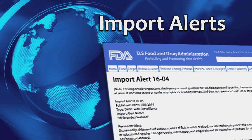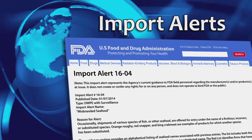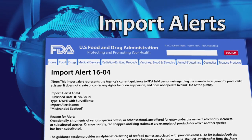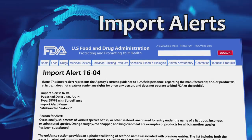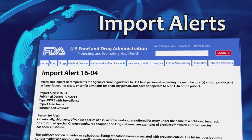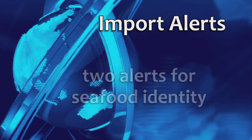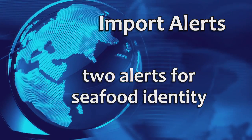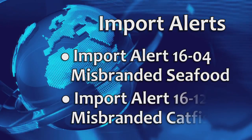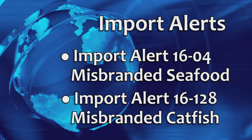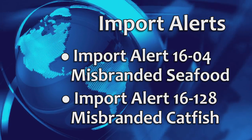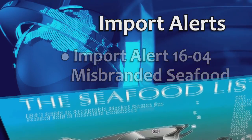Import alerts are product, firm, or country specific and describe known violations of FDA's laws and regulations. Although there are several alerts that involve seafood, we have two alerts specifically for seafood identity: misbranded seafood products and misbranded catfish. All seafood import alerts begin with the number 16 and are found on FDA's website.